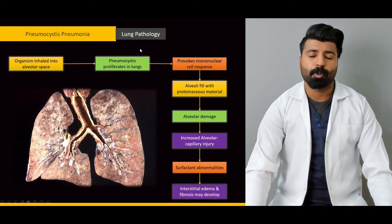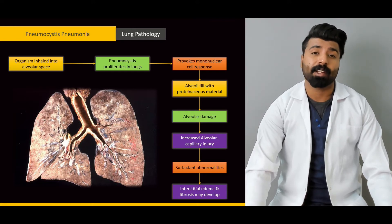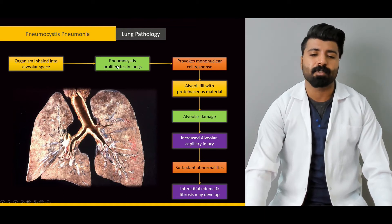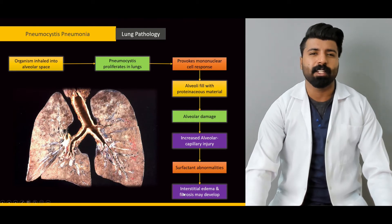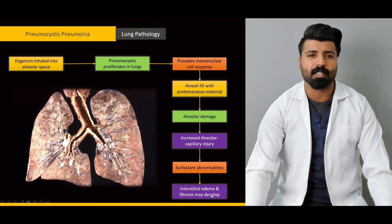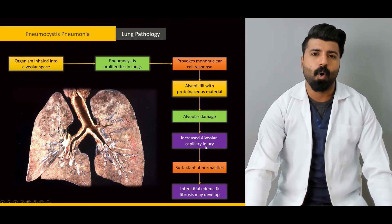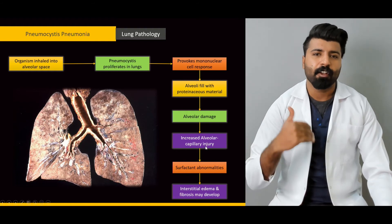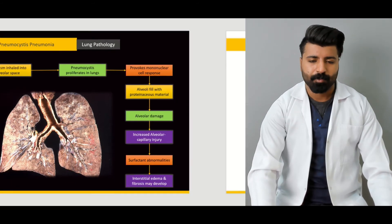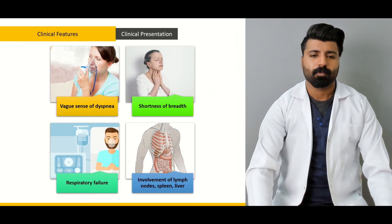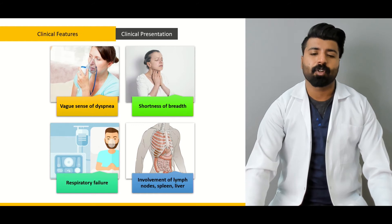In this lecture we'll talk about lung manifestations, because the pulmonary system is the primary target organ for this pathology. We'll discuss how the organism enters the system, proliferates in the lungs, and how this leads to interstitial edema and fibrosis.